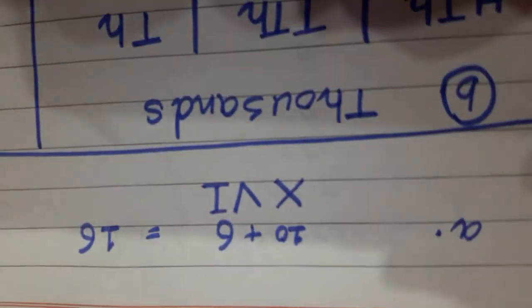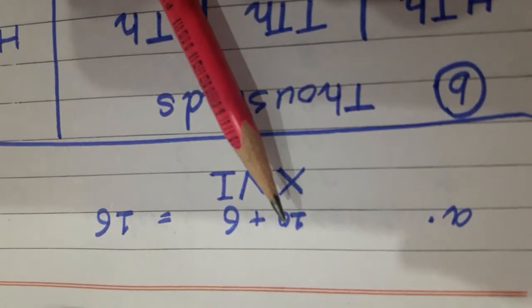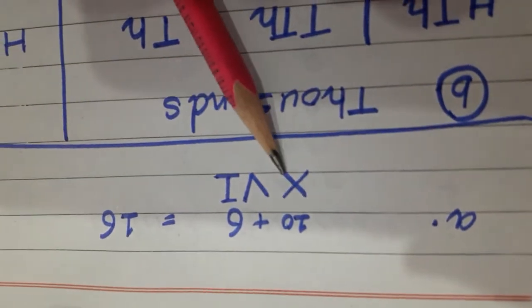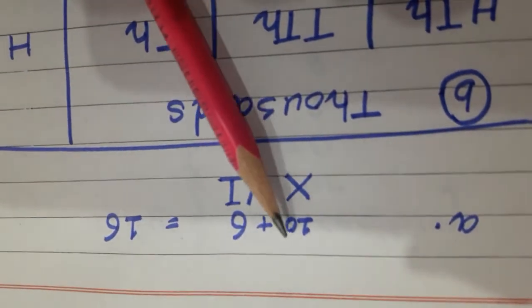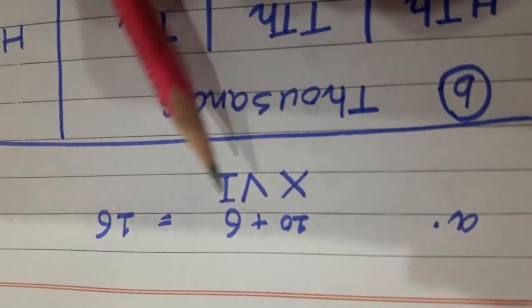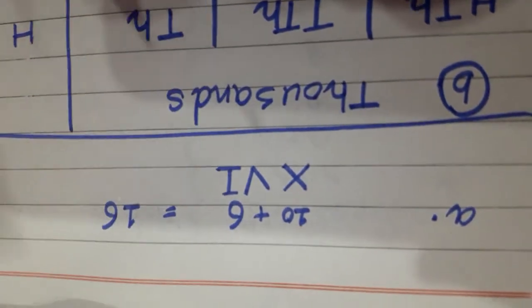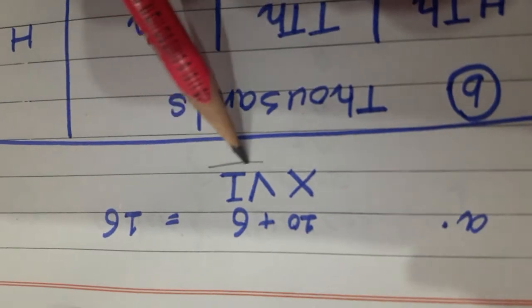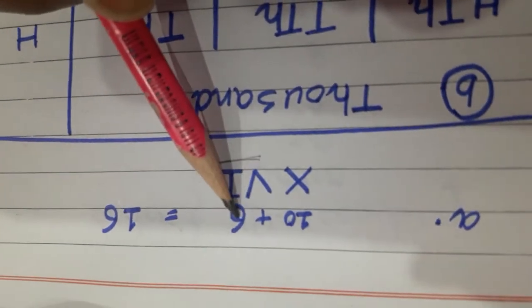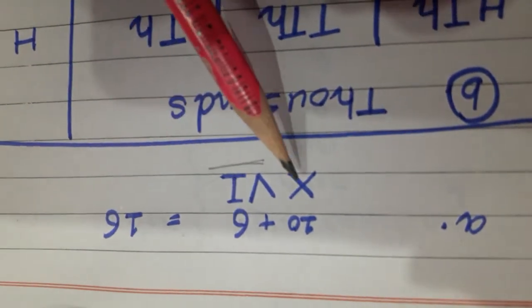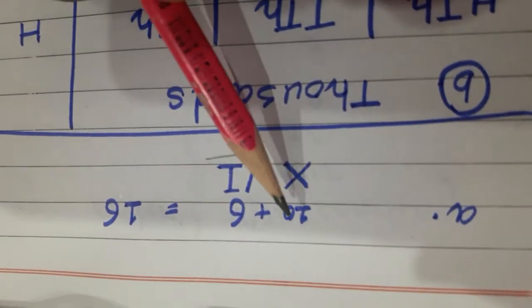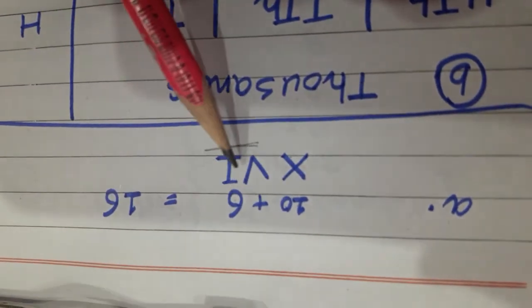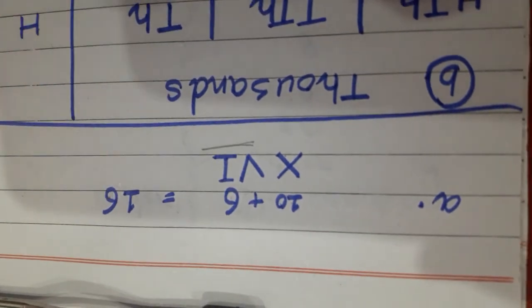Okay students, you can see that X means 10, and 5 and 1 means 6 — so this number means 6. X means 10, so 10 plus 6 is 16.